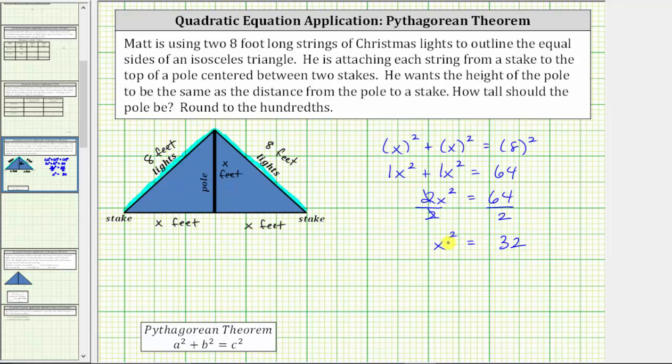Now to solve for x, we need to undo the squaring by taking the square root of both sides of the equation. When we do this, we are going to get a positive and negative solution.